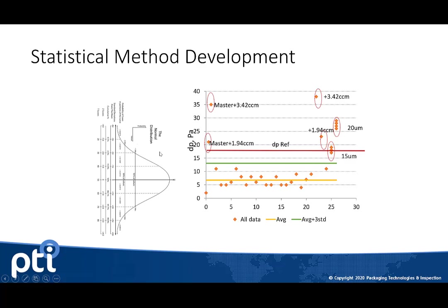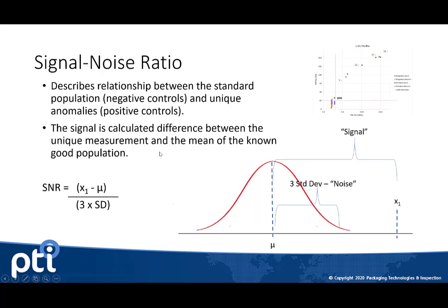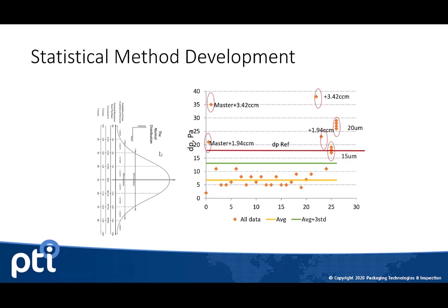The goal in the pharmaceutical industry is that one defect per 10,000 is what's critical. One in 10,000 is dictated by a four standard deviation separation from the mean. If we go four standard deviations up and put a pass-fail limit there, that's where you will see only one in 10,000 false rejects.